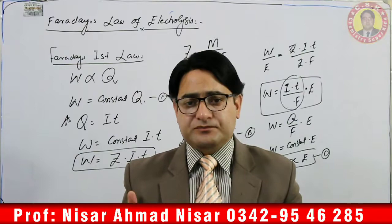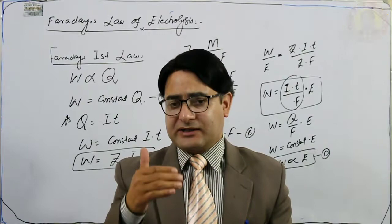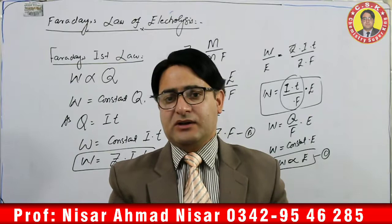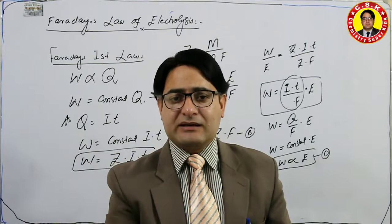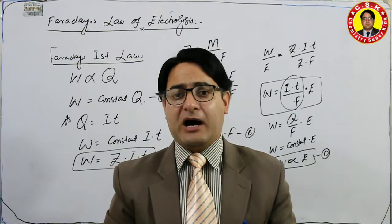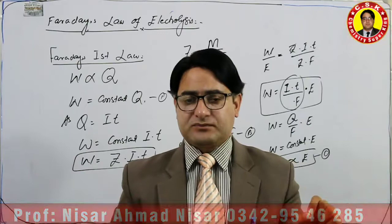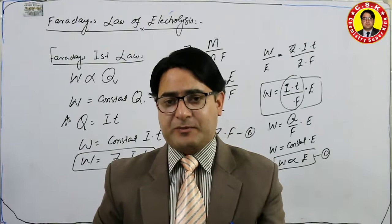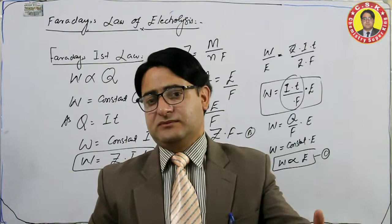Faraday's First Law of Electrolysis states: the amount of substance liberated or deposited at an electrode is directly proportional to the amount of electricity passed through the cell. That is: amount of substance deposited or liberated at electrode is directly proportional to the quantity of electricity passed through the cell.